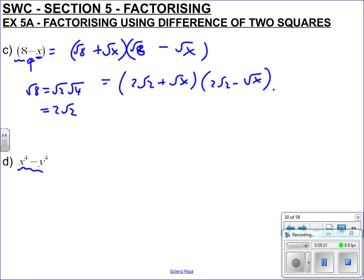Now part d, x to the 4 minus y to the 4. It has a minus in there, so hopefully we recognise we need plus and minus. x to the 4 square root is x squared, x squared. y to the 4 square root, y squared, y squared. Now, hopefully you can see, there's another minus here. Does that mean that this can be factorised again?